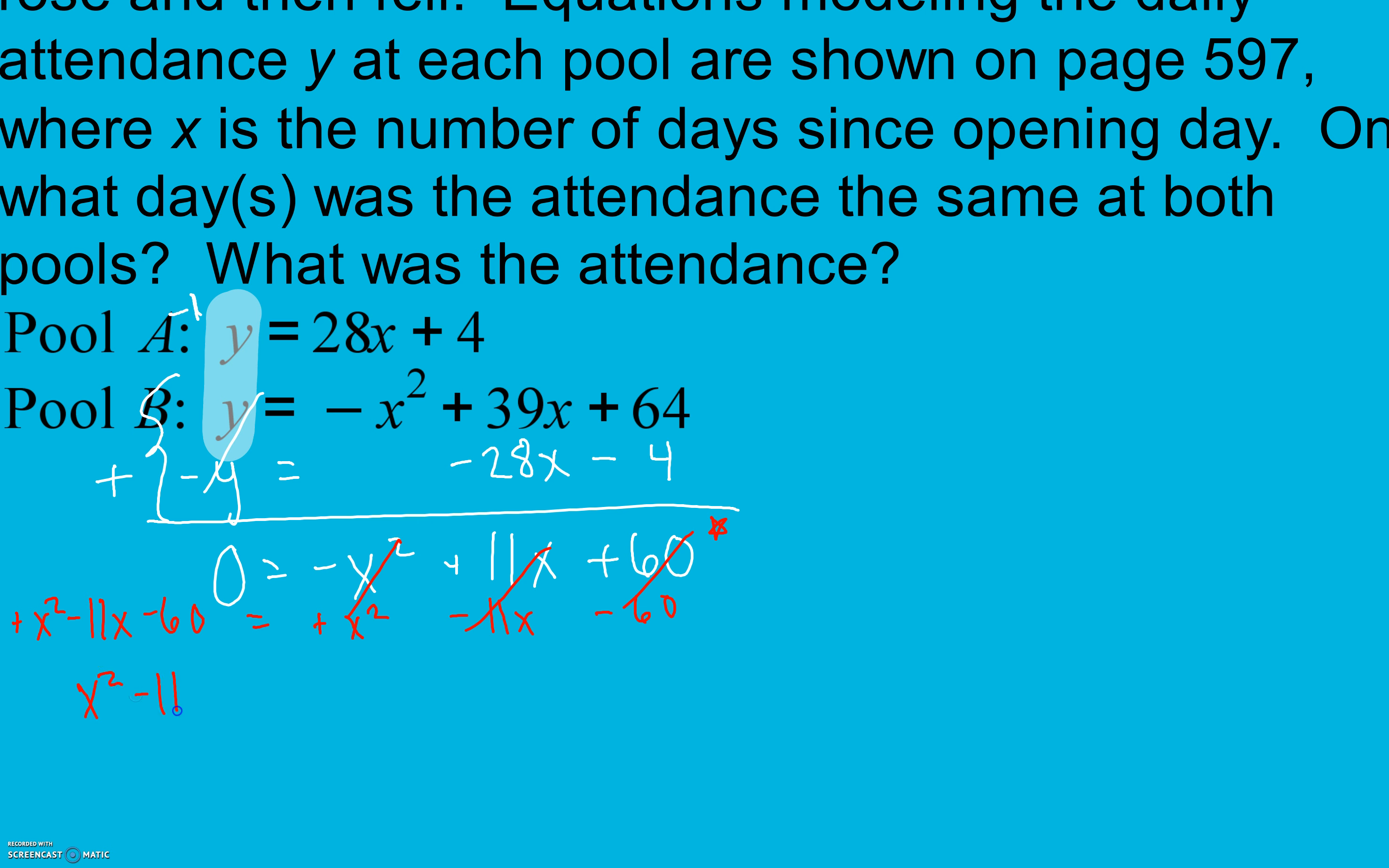So I have X squared minus 11X minus 60 equals 0. Now we're going to factor. So we're going to multiply to 60, subtract to 11, which here are 15 and 4. Because 15 is bigger, it gets a sign in the middle. And because we subtracted and found the difference, our signs will be different, so plus 4. Now our zero product property from section 9.4, I believe, says that in order to multiply to 0, one of our factors has to be 0, or our other factor has to be 0, or both, if they both happen to be the same. And then we solve from there.